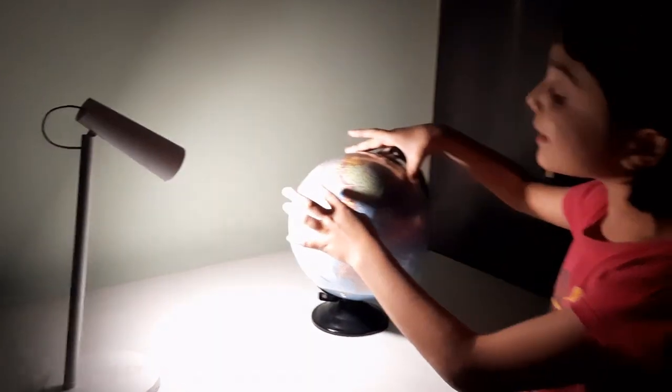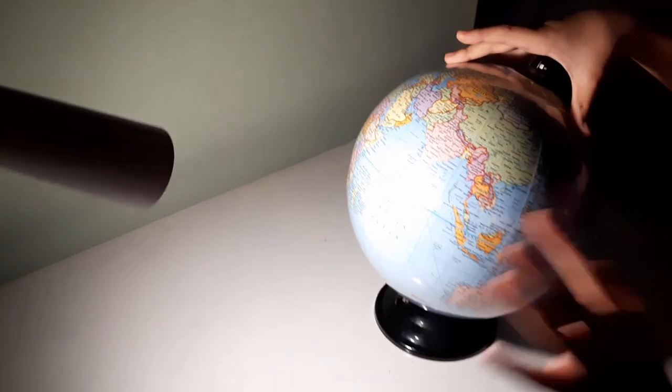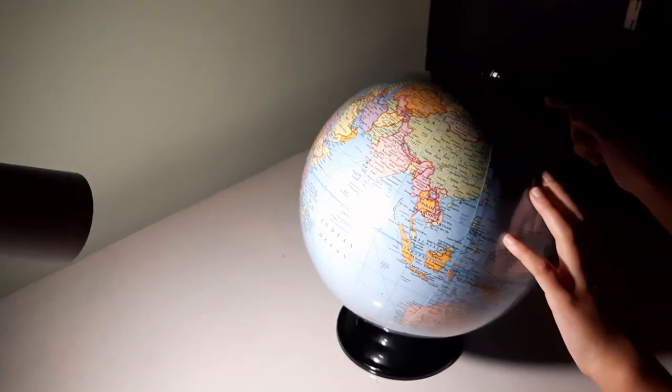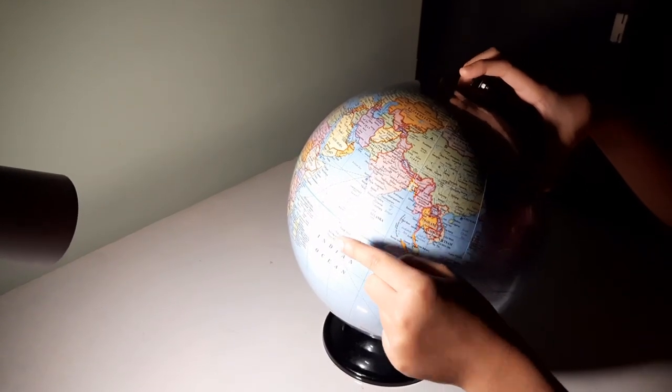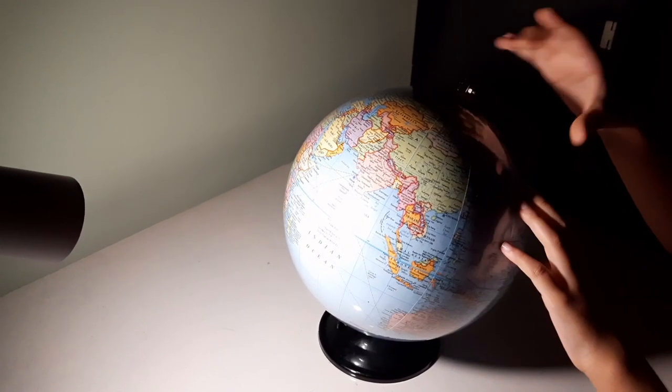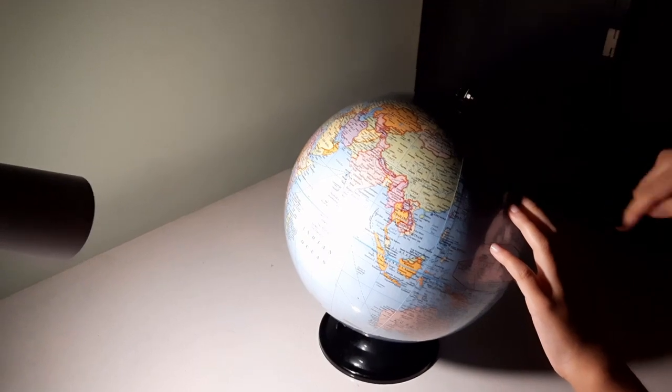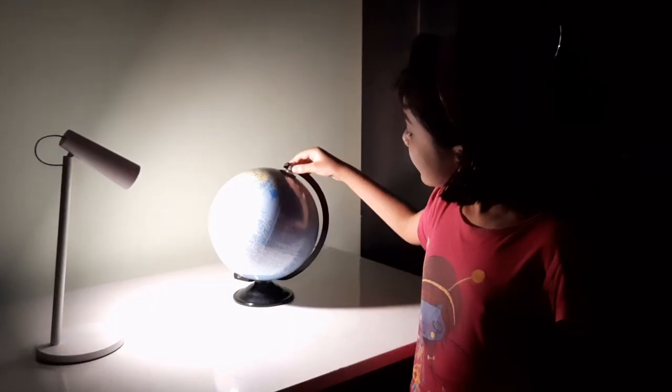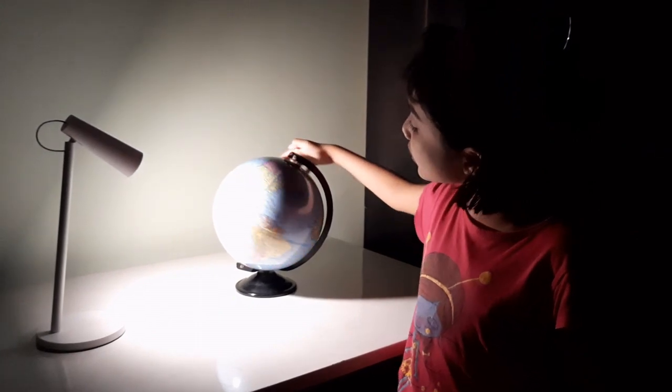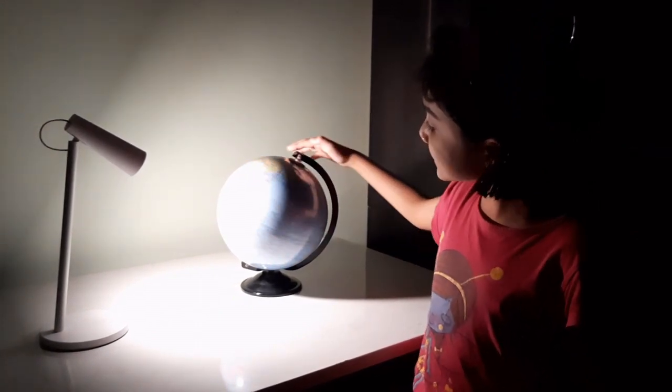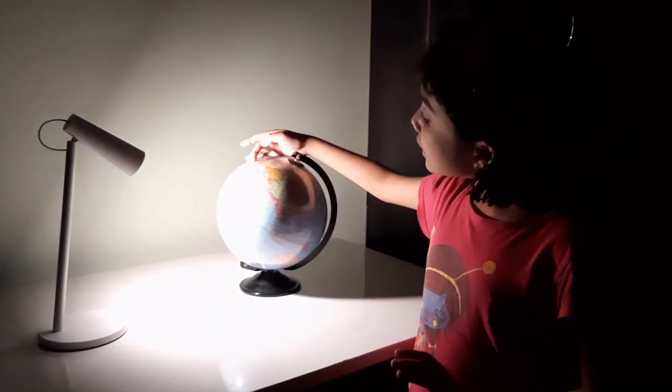Suppose India is facing the sun and United States of America is not facing the sun. So currently India has day and United States of America has night. The earth rotates 360 degrees in 24 hours. In one hour, the earth rotates by 15 degrees.